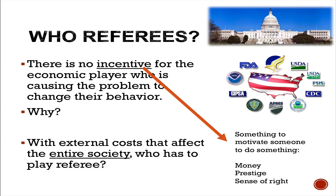That outside referee is often the government, saying stop polluting or else. Hence all of our regulatory agencies — the FDA, the USDA, the CDC — all of those regulatory agencies in the executive branch that we talked about first semester. Part of their job is to act as referees for things that are going wrong in society.